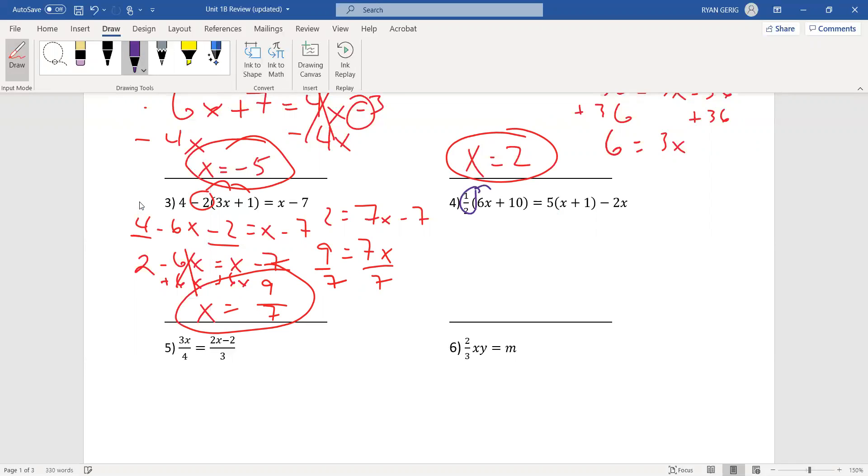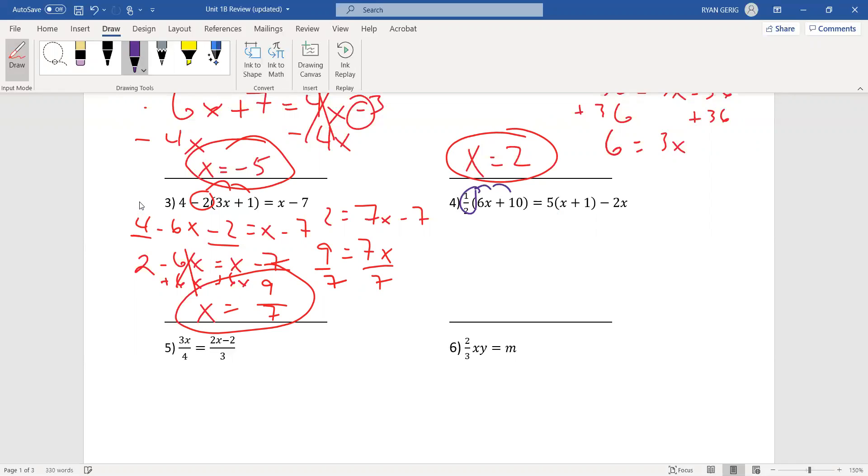I'm distributing a 1 half. 1 half times 6x. So, it's half of 6x is 3x. 1 half times 10 is 5. I'm going to distribute the 5. 5x plus 5 minus 2x at the end. I'm going to put my like terms together here on the right side. So, that's 3x plus 5. 5x minus 2x is 3x plus 5.